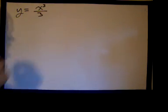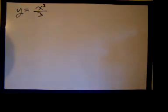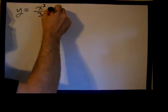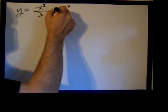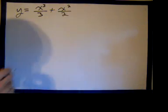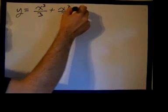Hello, today we're going to take a derivative by rules. We're going to take the first derivative of y equals x cubed over 3 plus x squared over 2 plus x over 4.